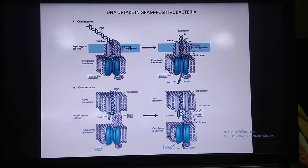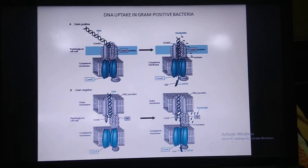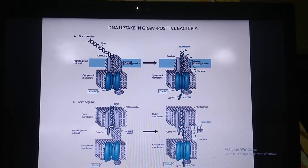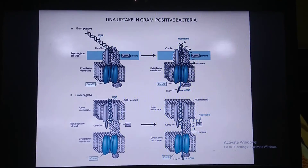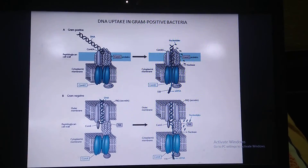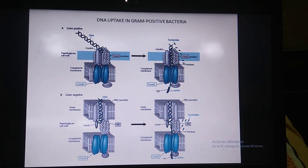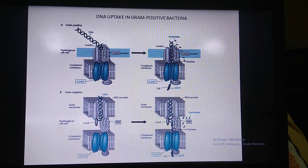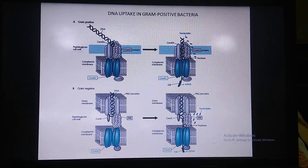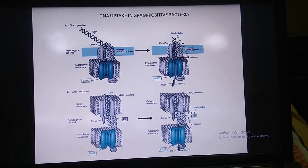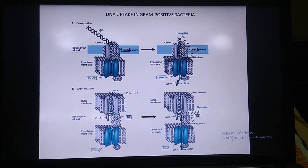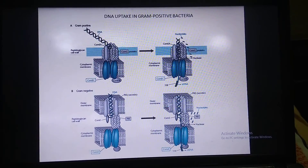To make cells competent, we perform chemical modifications of the bacterial cell wall. Chemically we make them competent using calcium chloride and other methods. Electroporation is another method by which we can deliberately and forcefully make bacteria take up foreign DNA. Transformation is a very important process, though there are many complications involved in taking up foreign DNA.